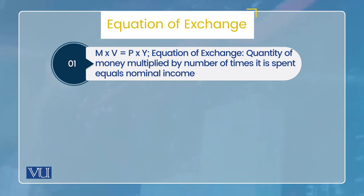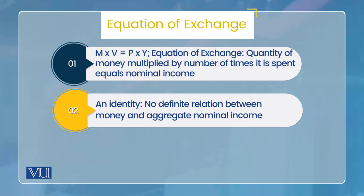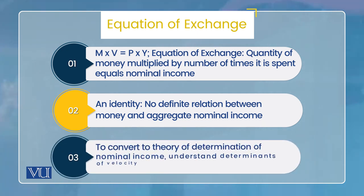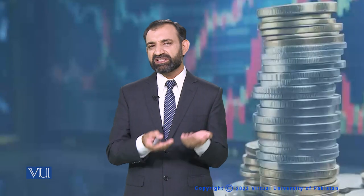ابتدائی طور پر دیکھیں تو یہ ایک identity ہے — جتنی money اور اس کی velocity کو multiply کرنے سے آتا ہے وہی total income اور total spending ہوتی ہے، تو اس میں theory کیا ہے؟ Identity کا مطلب یہ ہوتا ہے کہ جس کے درمیان behavioral relationship نہ ہو بلکہ دونوں sides equation کی by definition equal ہوں۔ تو اگر اسے theory میں convert کرنا ہے تو ہمیں behavior add کرنا پڑے گا، اور اس کے لیے velocity پر focus کریں گے — velocity کے determinants سے پتہ چل سکتا ہے کہ یہ equation identity سے quantity theory of money میں کیسے convert ہوتی ہے۔